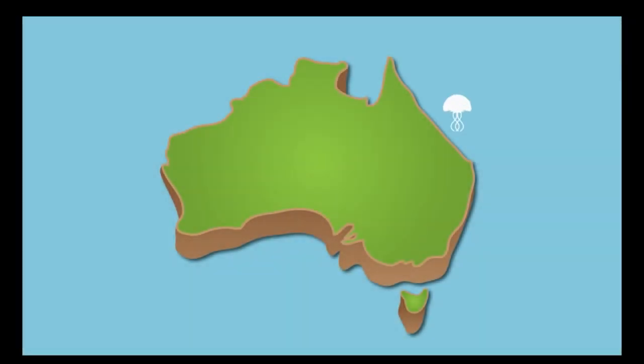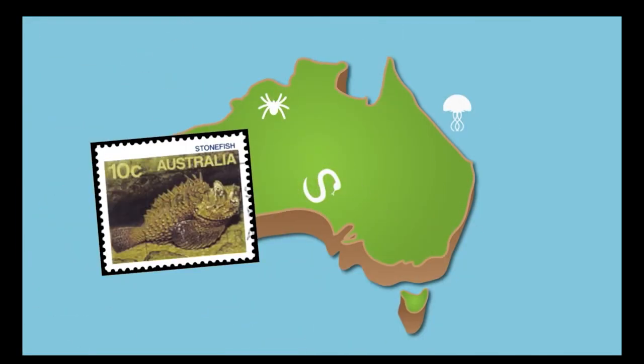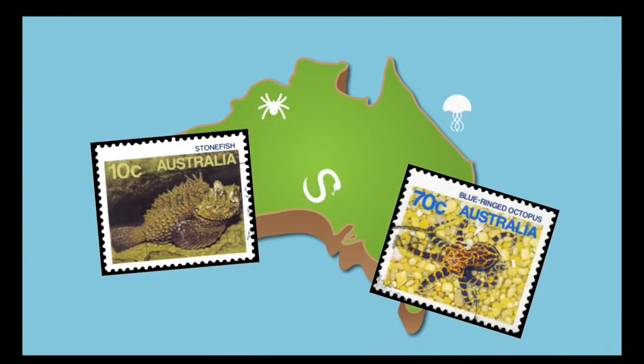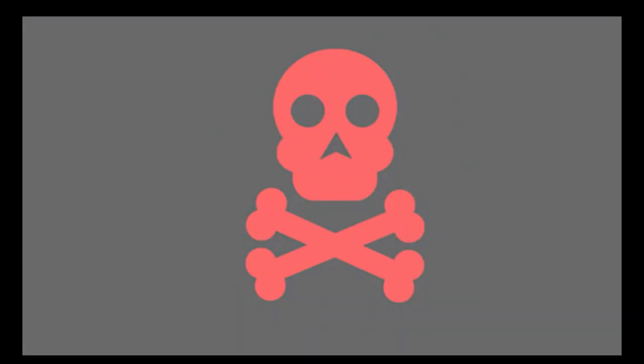Australia is home to some of the world's most poisonous animals. Thousands of bites and stings occur every year, and while most cause only minor irritation, some are life-threatening. Fast and appropriate first aid can stop or slow the spread of venom and save lives. The most common method is the pressure immobilisation technique, or PIT, which aims to slow the movement of venom from the bite site into the blood circulation. Applying the PIT will help delay poisoning until appropriate medical assistance is received.